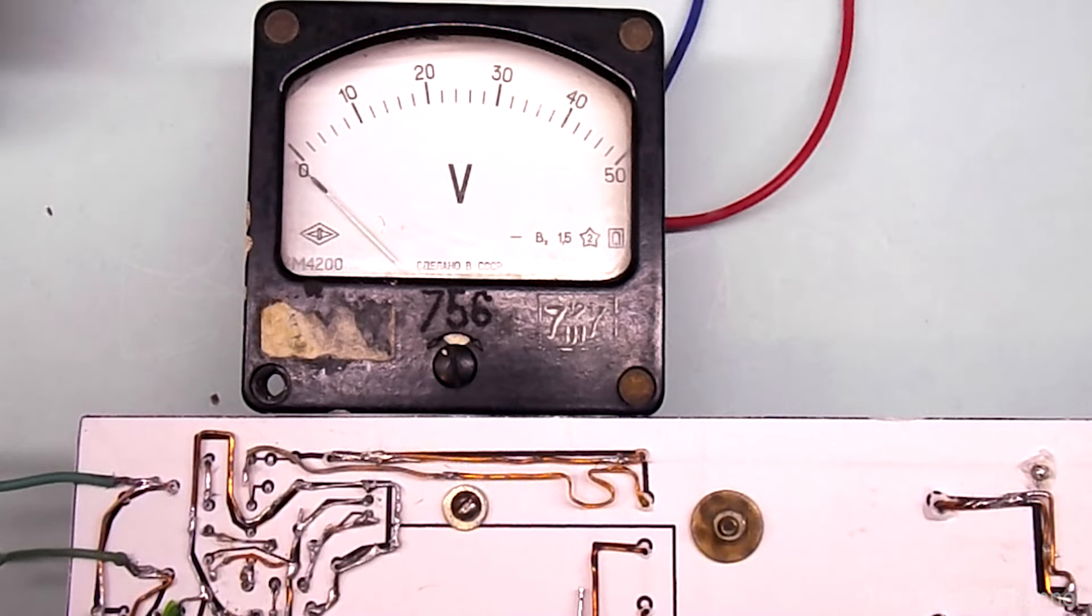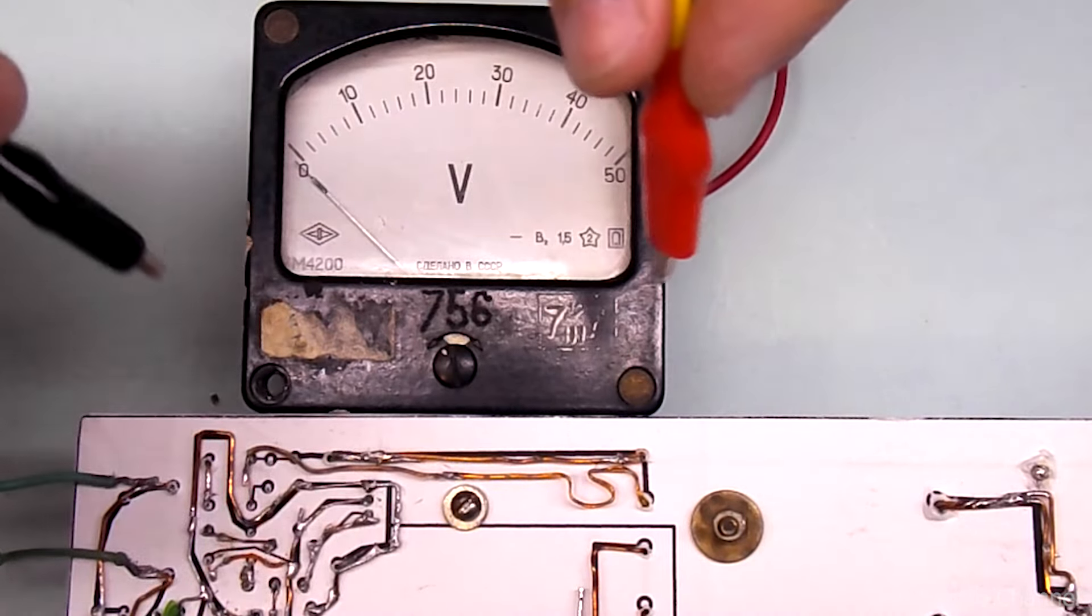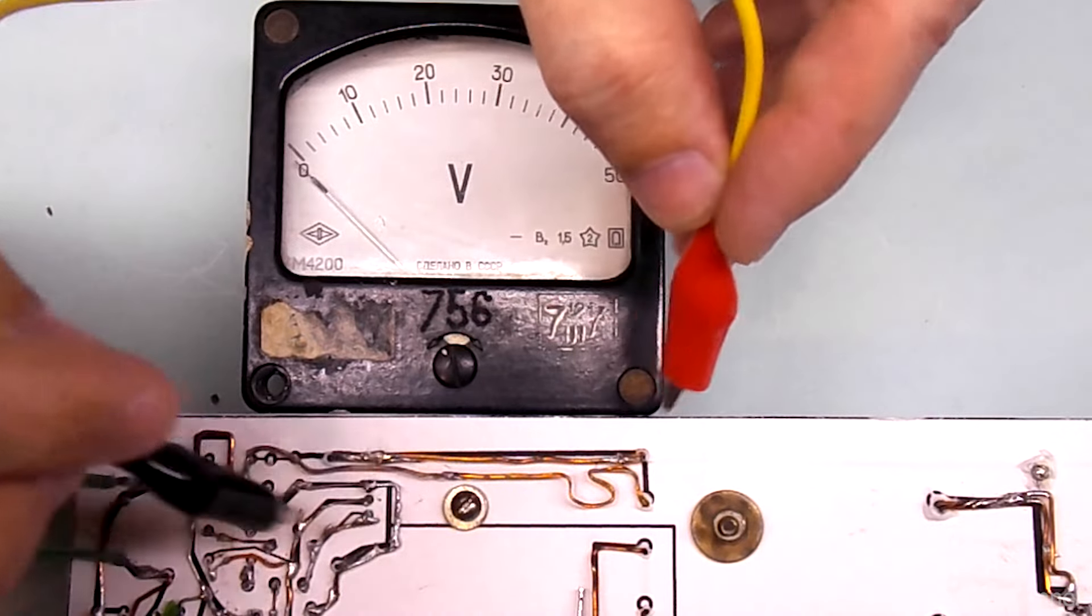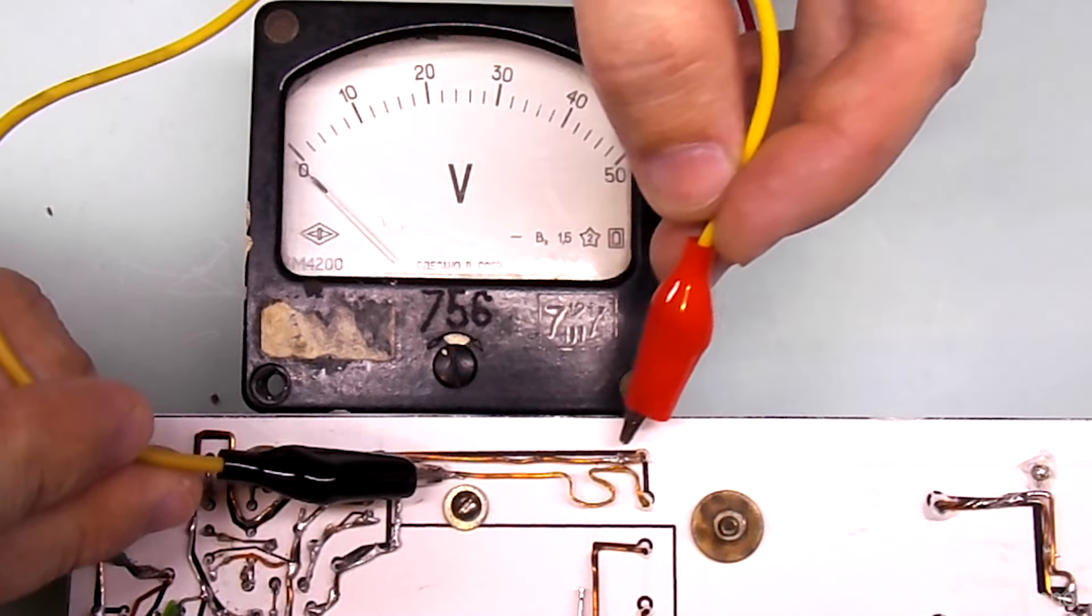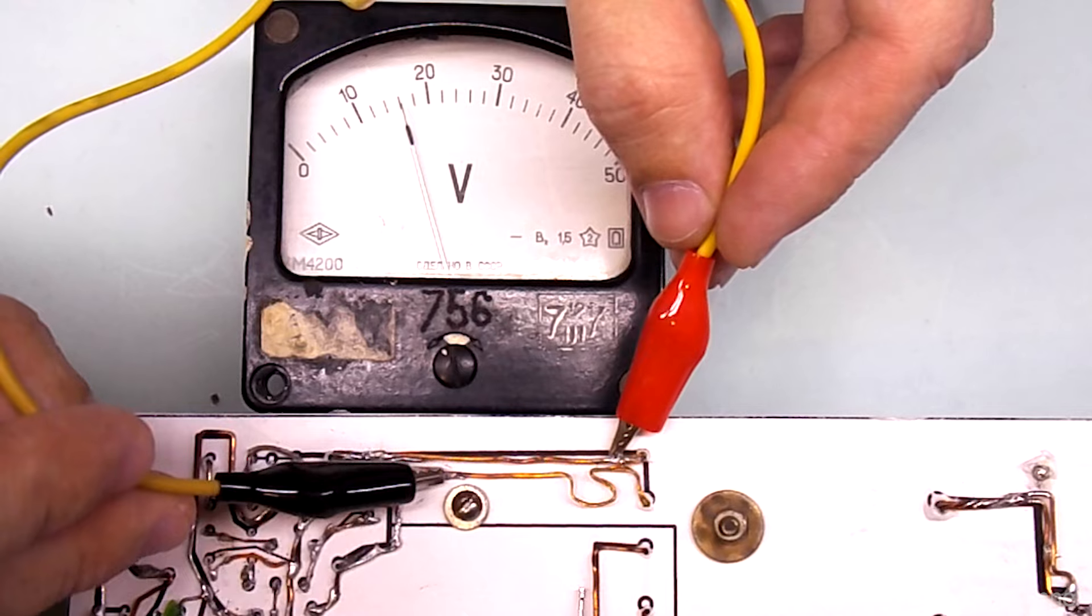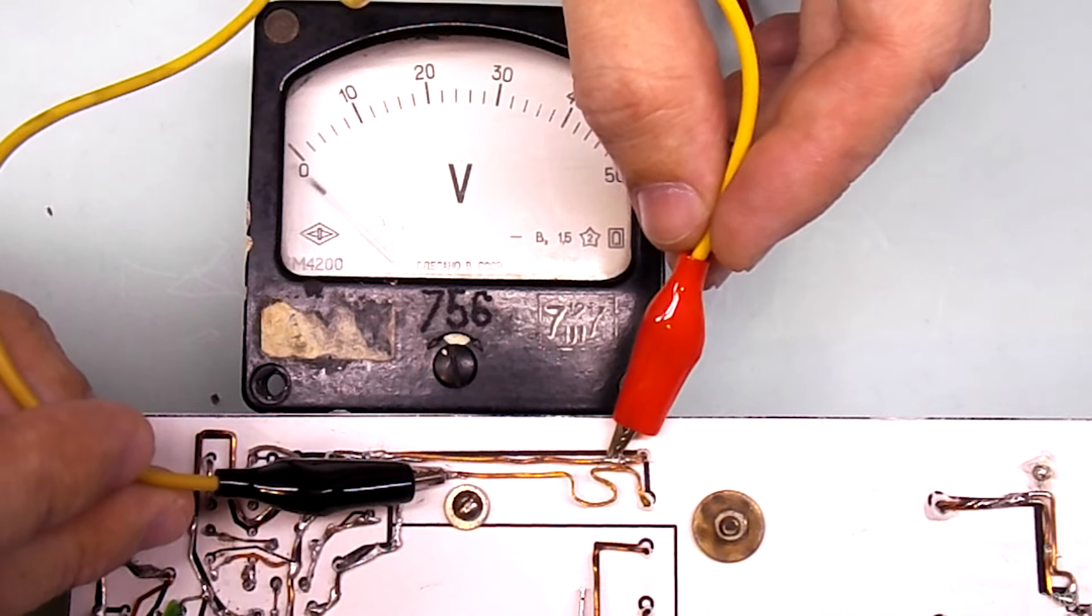Now let's measure the voltage on the control winding of the transistor bases. When connecting the probes, you need to be very careful not to short-circuit anything. In the first half cycle the voltage shows 16 volts.